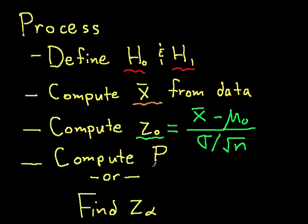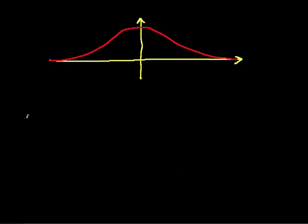So having computed z0, our next step is to either compute the p-value, p, or to be given a confidence level and alpha, and from that alpha, find z alpha, and then compare z0 to z alpha. We'll show both methods. We'll start by computing the p-value. So as a reminder, the p-value is the probability of observing a sample mean that is at least as extreme as x-bar given h0.